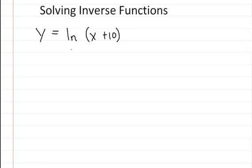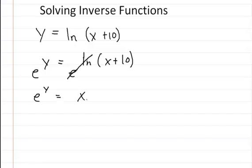So we're going to get rid of the natural log by using e. Let's raise both sides: e to the y equals e to the ln of x plus 10. Now when you do this, the e and the natural log cancel out, so you're left with e to the y equals x plus 10.